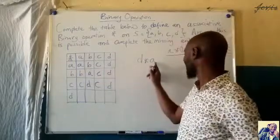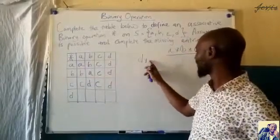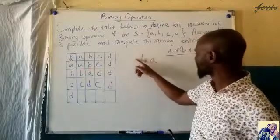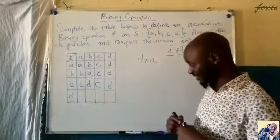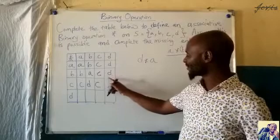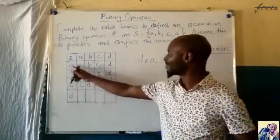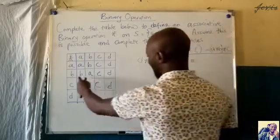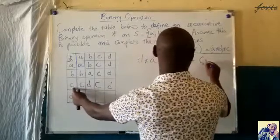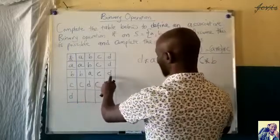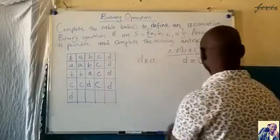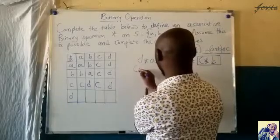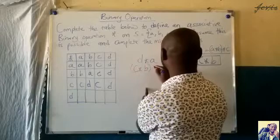When you look at A, all the entries in A's row are filled up. So when we have A, it will be easy to work with because those entries are complete. So I will try to eliminate D. Where do I have D? I have D here and D there. This D is the same as C operate B. So wherever there is D, I will be replacing it with C operate B. So I will have C operate B, then operate A.